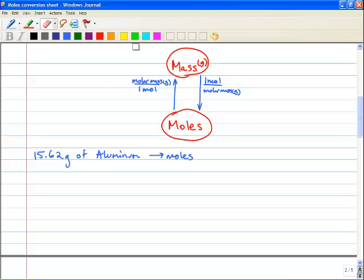So we're going from mass, we're going to follow my arrow down to moles. So we're going to have moles on top, because that's what we want, and our molar mass on the bottom.